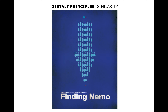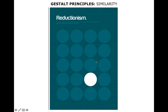We have both inverse similarity and similarity here. We notice Dory and Nemo at the top because of their separation or different color. We have similarity with the types of fish while creating an arrow that helps us look down towards the bottom. And here, with inverse and similarity, we immediately notice the white dot and carry it to the white text.